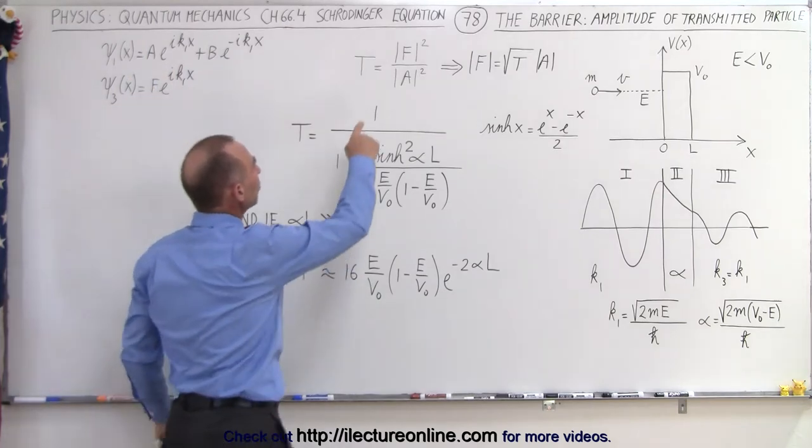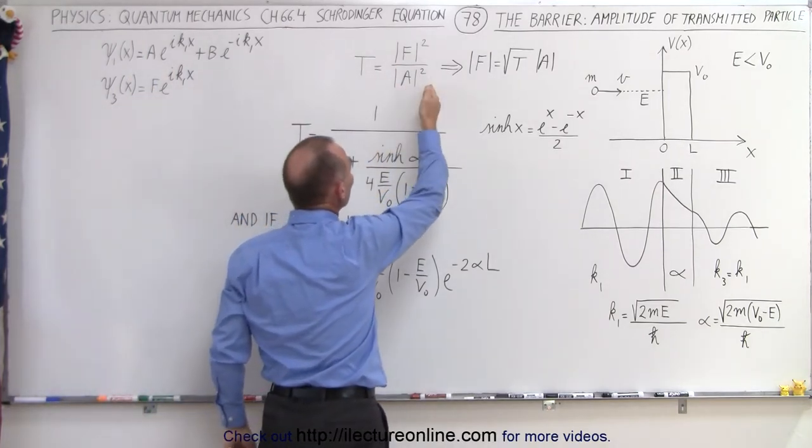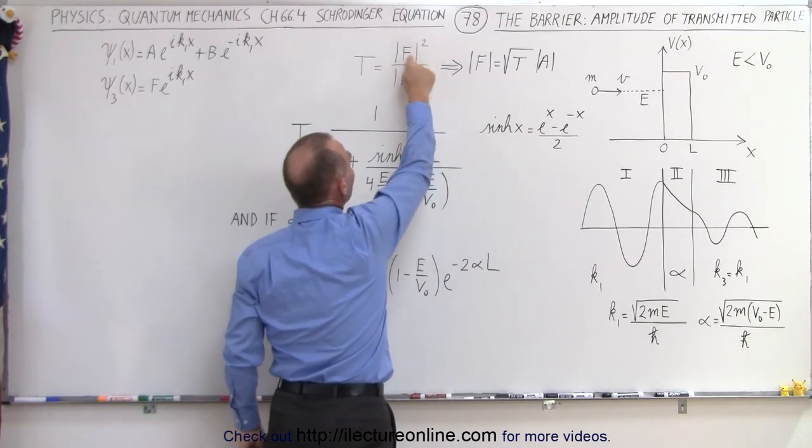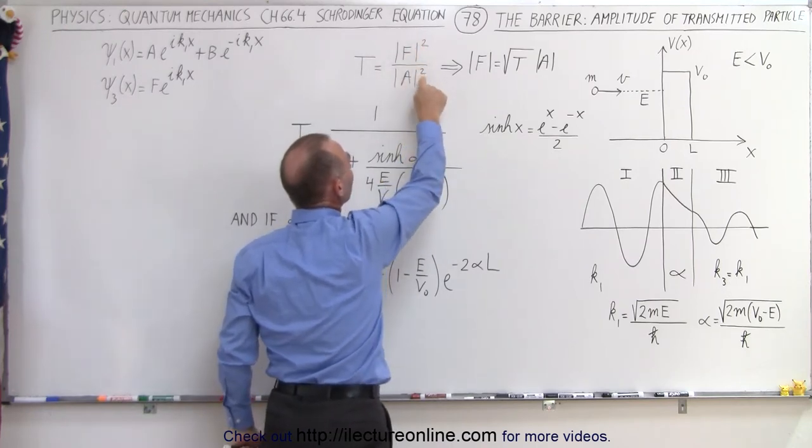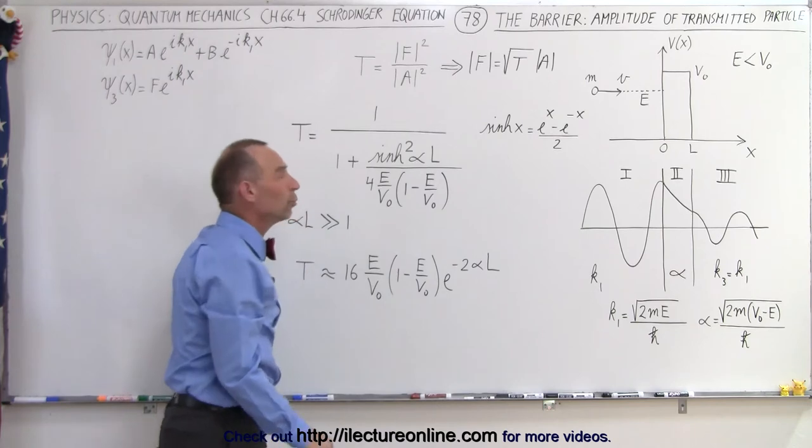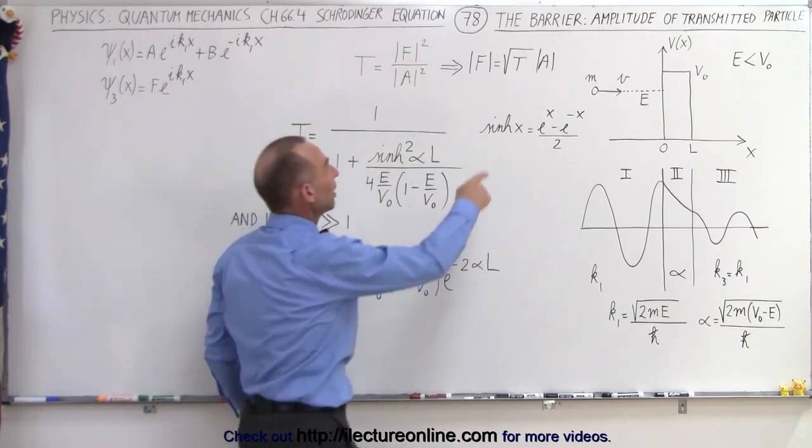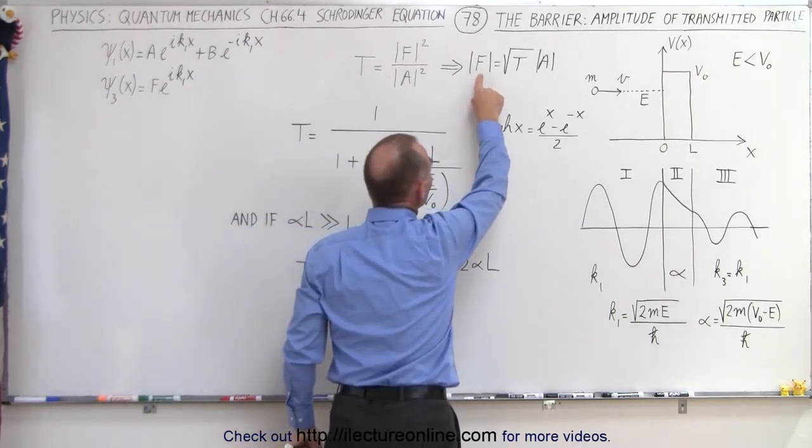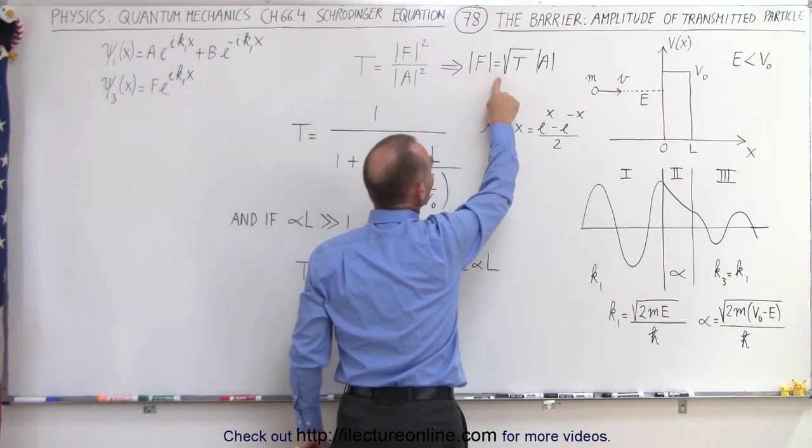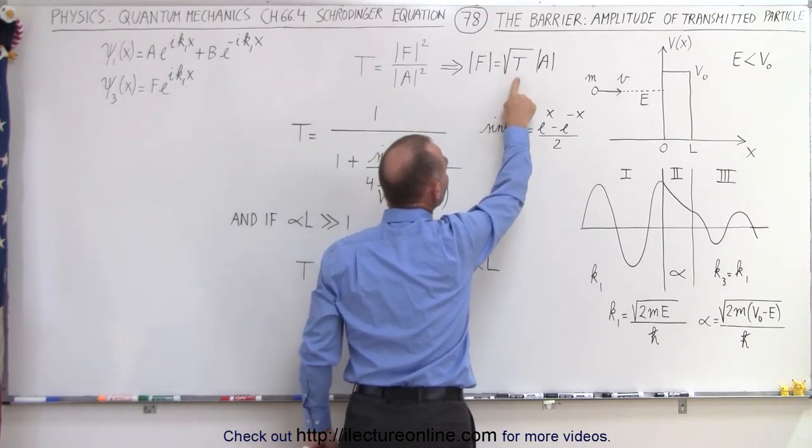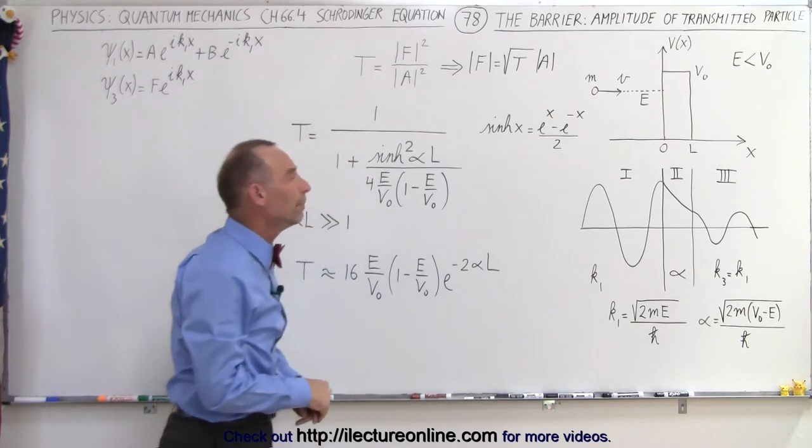The transmission coefficient is equal to the ratio of the square of the amplitude in region 3 divided by the square of the amplitude in region 1, which therefore means that the amplitude of the oscillations in region 3 is equal to the square root of T times the amplitude of the oscillations in region 1.